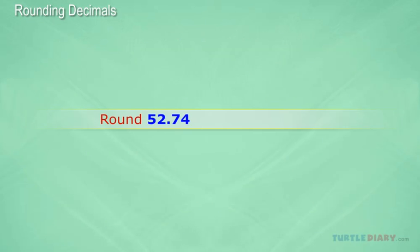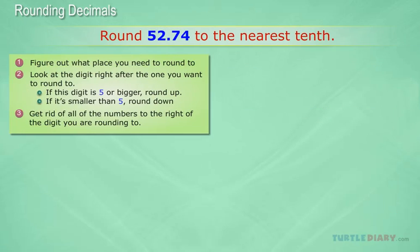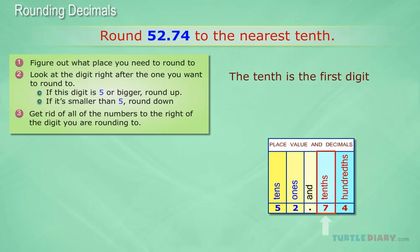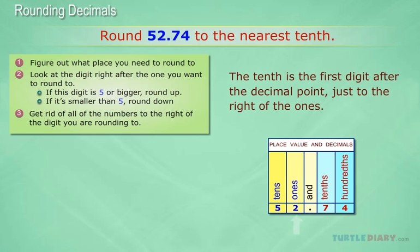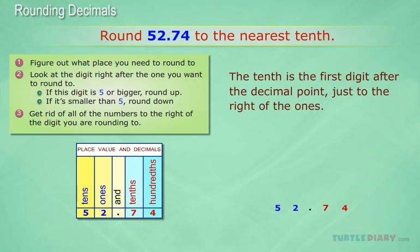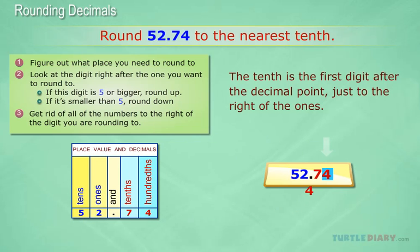Question: Round 52.74 to the nearest tenth. Answer: The tenth is the first digit after the decimal point, just to the right of the ones. Let's look at the digit right after it. This digit is smaller than 5, so we leave our tenths digit the same. Finally, we get rid of the numbers to the right of the tenths.